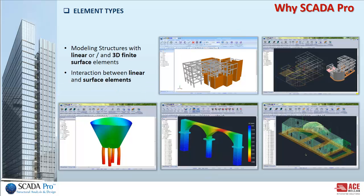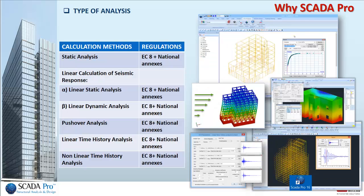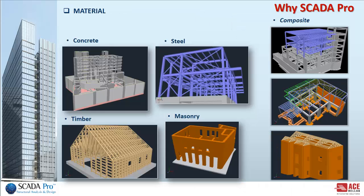Using the element types, you can model structures with linear or 3D finite surface elements, considering also the interaction between linear and surface elements. The different types of analysis offer different calculation methods according to Eurocodes and national annexes. The different materials give the opportunity to create any kind of structure, including composite structures.